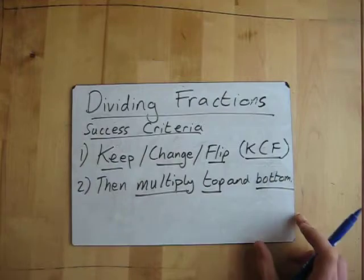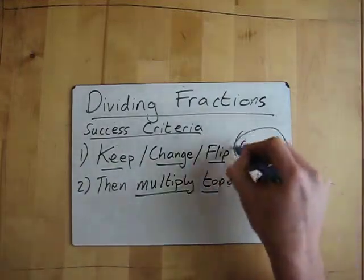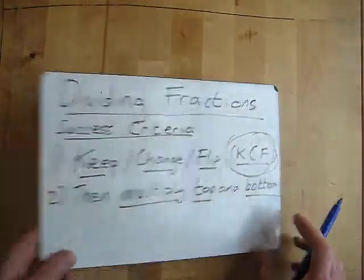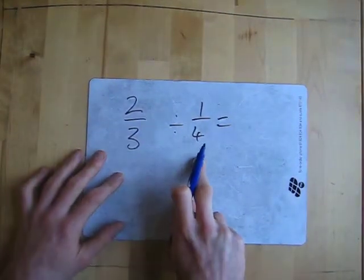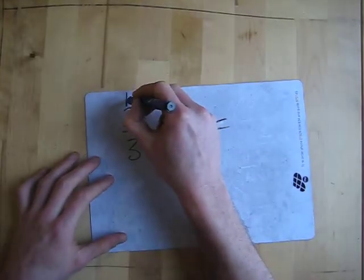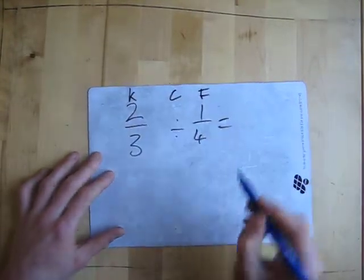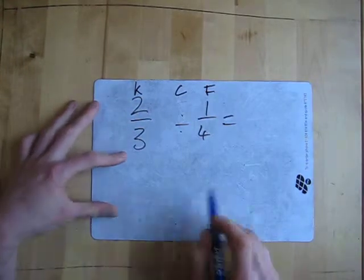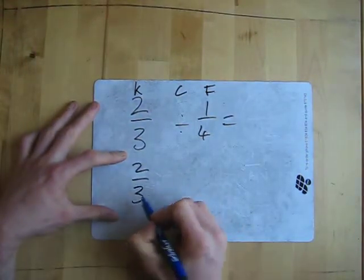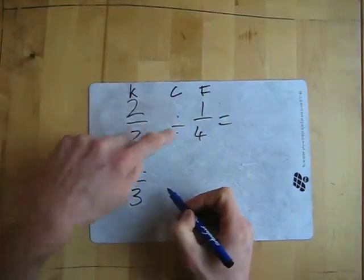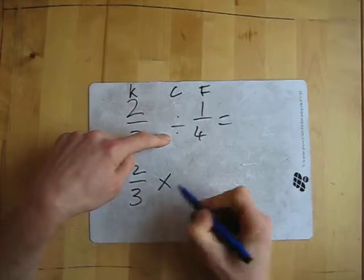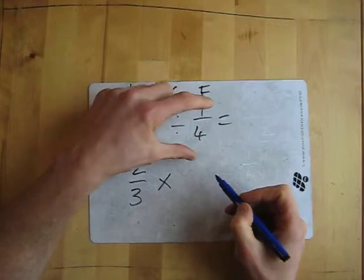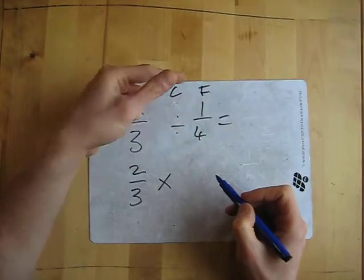Keep, change, flip is the basic thing that we need to remember, KCF. So you've got three processes here: keep, change, and flip. We're going to keep this the same, so it stays exactly as it is. Change the divide to the opposite, to multiply. And then you're going to flip this fraction, so the bottom number's at the top and the top number's at the bottom.